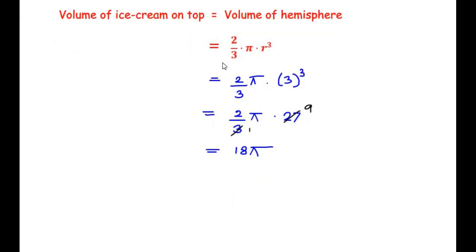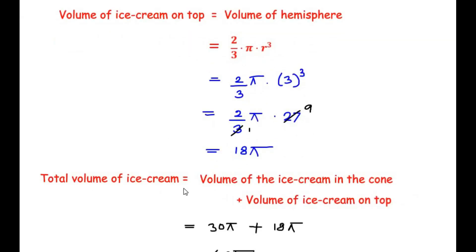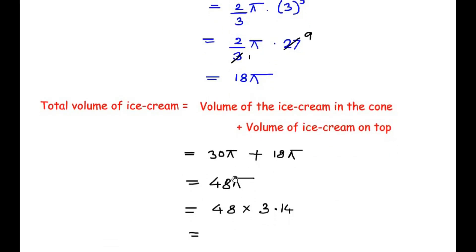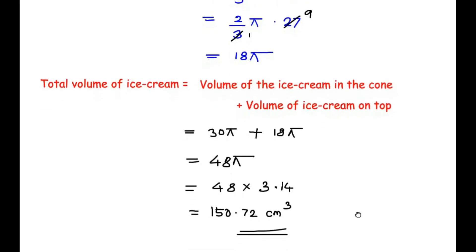The total volume of ice cream is the volume in the cone plus the volume on top: 30π + 18π = 48π. Substituting π = 3.14, we get 48 × 3.14 = 150.72 cm³. This is the total volume of ice cream filled in the cone along with the hemisphere.